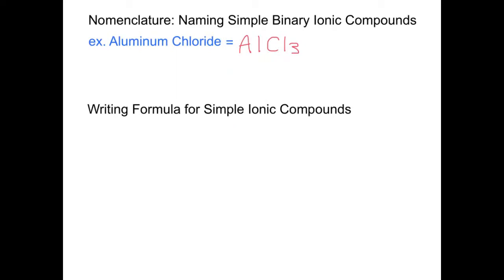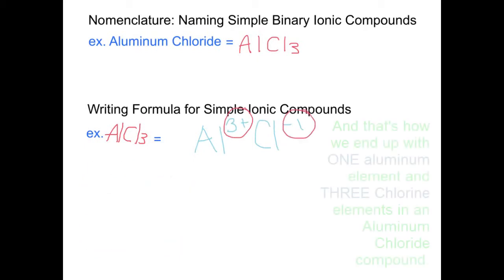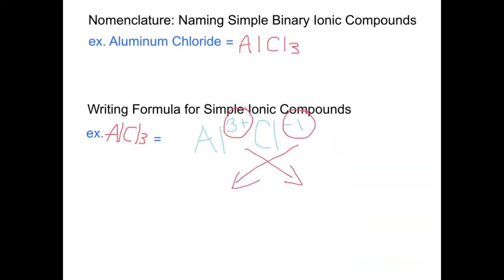Writing the formula of simple ionic compounds. For example, to write the formula as AlCl3, you must know the charge of each element. Aluminum has a charge of positive 3, while chloride has a negative charge. Now we're going to circle each of these charges and crisscross them. And that is how we end up with AlCl3. Now let's practice.